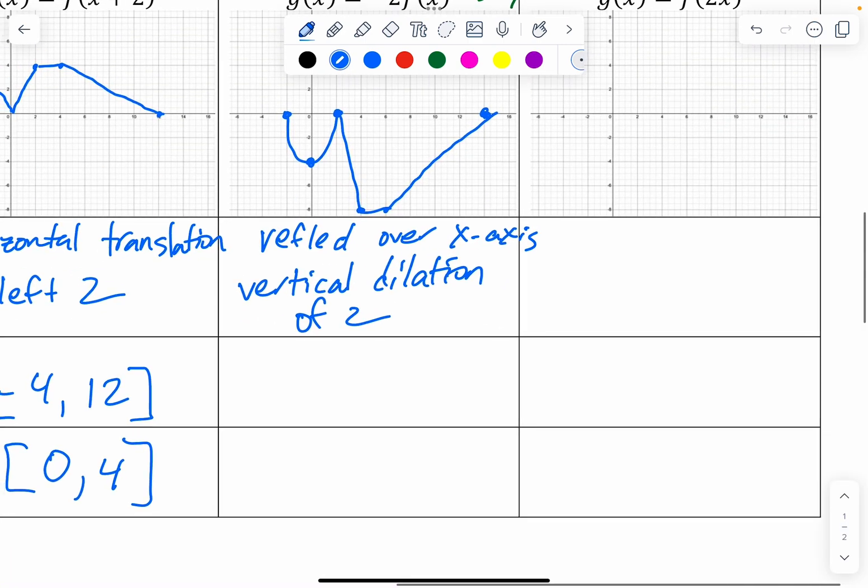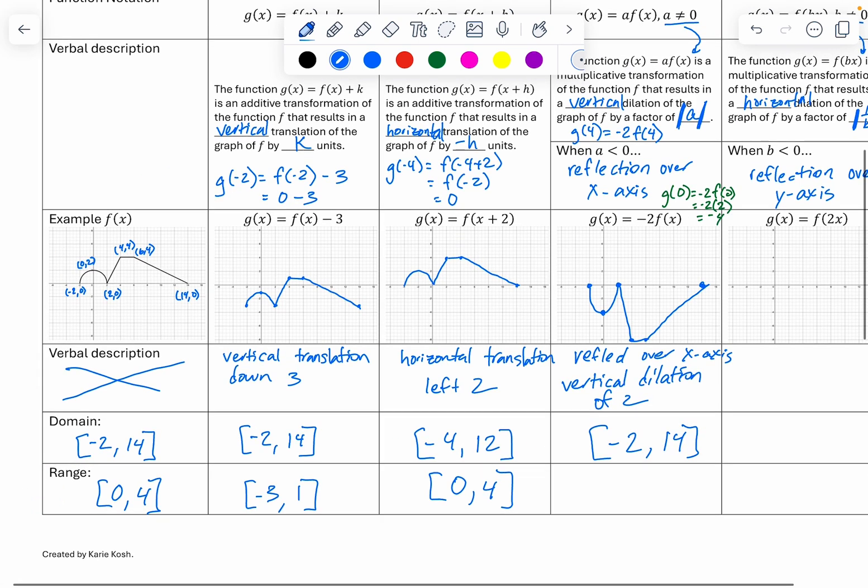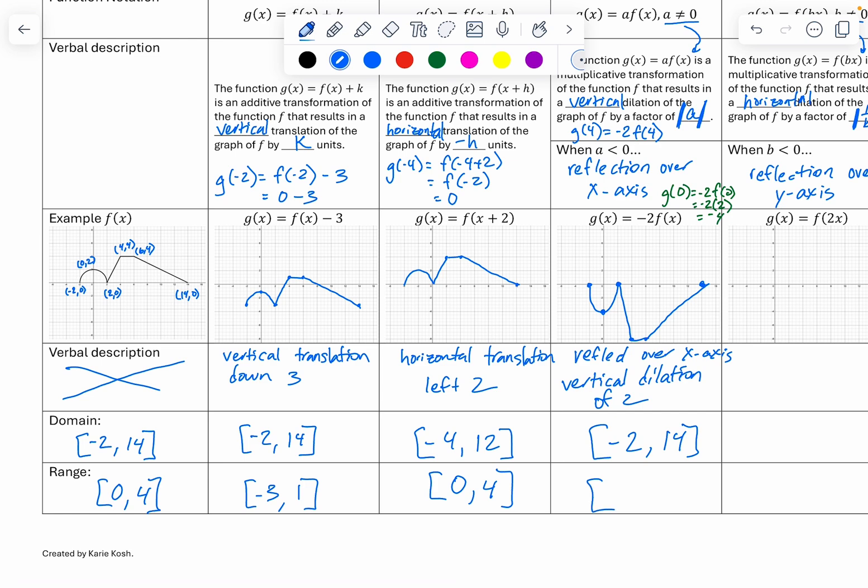What's my domain? Did the domain change? No. We didn't affect our x values. We were just affecting our y values. And so this is negative 2 to 14 still. And what's my range? Well, my range is now, I went as low as negative 8, and then as high as 0. So when I compare these right here, I'm multiplying both of those numbers by negative 2, which then switches kind of the order that I have them in because of the positive and the negative.